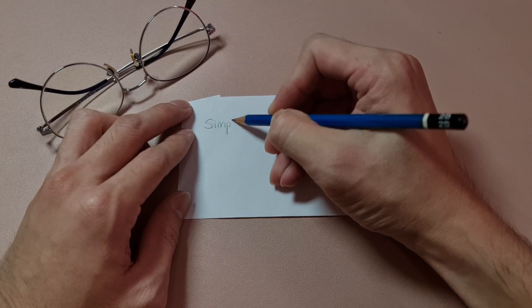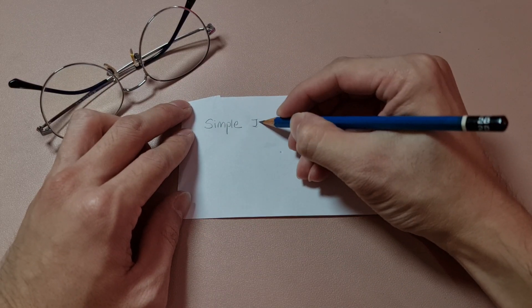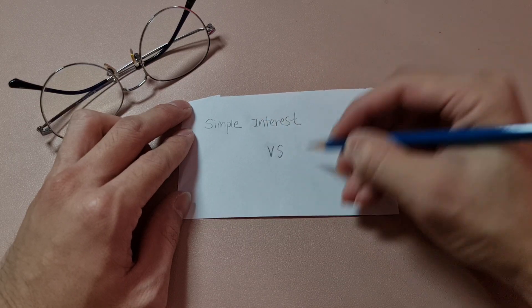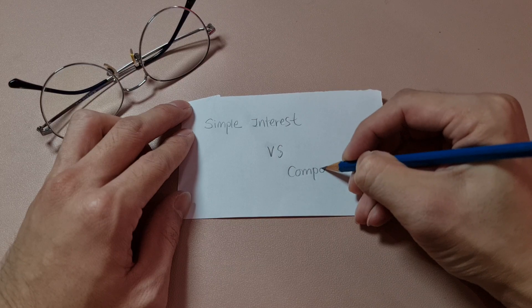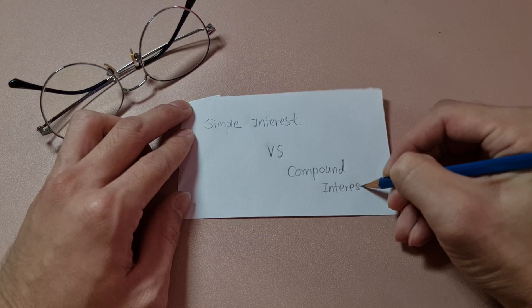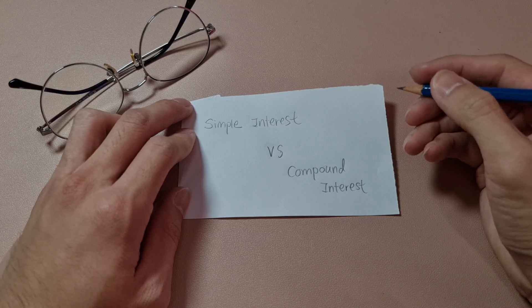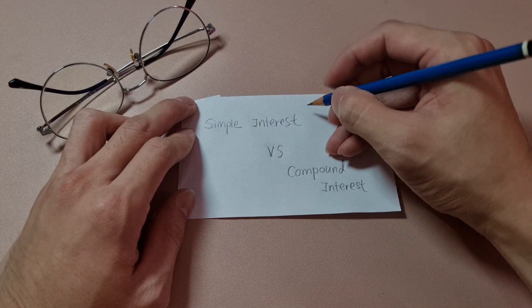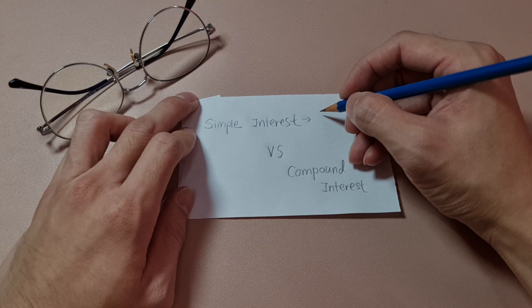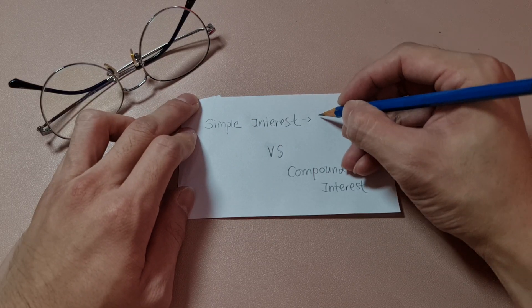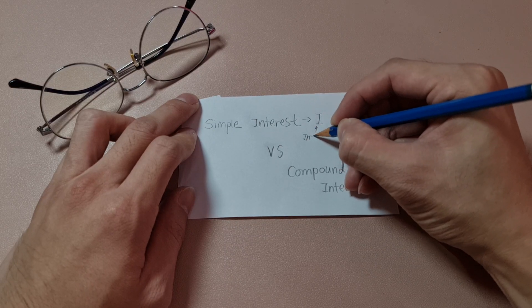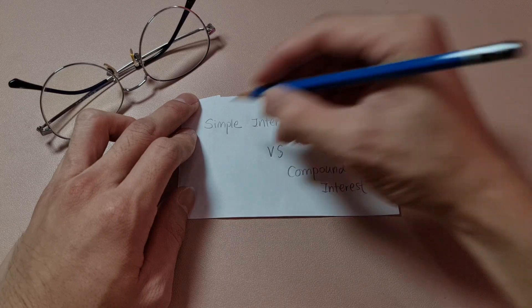One is called simple interest, and the other subtopic being compound interest. So simple interest is like a flat rate. Why not we go straight into our KSSM chapter 3, Form 3 syllabus, where the formula gives you I — I indicates interest. Simple interest.